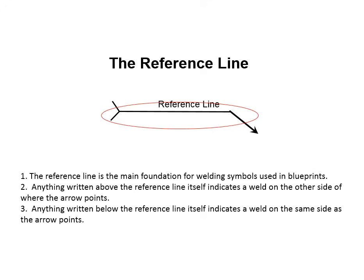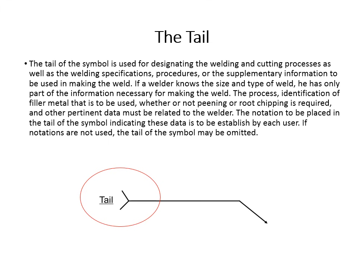The reference line is the main foundation for welding symbols used in blueprints. Anything written above the reference line indicates a weld on the other side of where the arrow points. Anything written below the reference line indicates a weld on the same side as the arrow points. The tail is used for designating welding and cutting processes, as well as welding specifications, procedures, or supplementary information. If notations are not used, the tail of the symbol may be omitted.